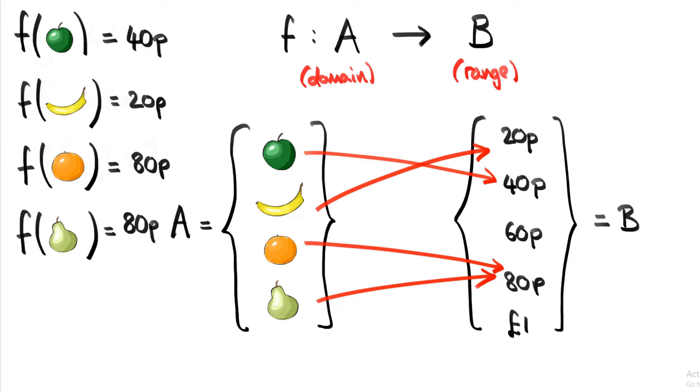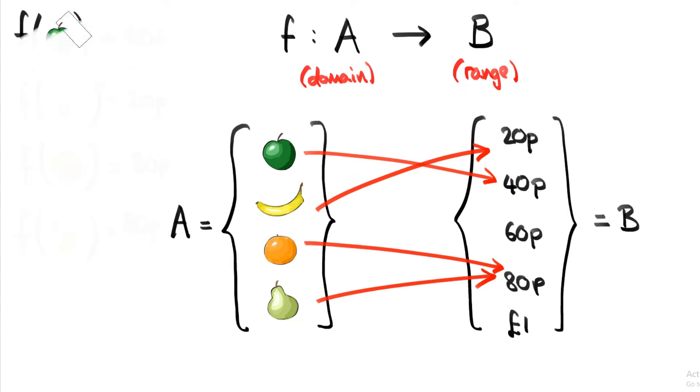And what we can do is we can begin to categorize these functions into different types, according to how they behave. And that's where these words injective, surjective, and bijective come in. Let's see what each one means.